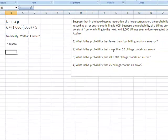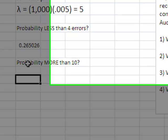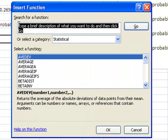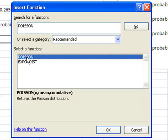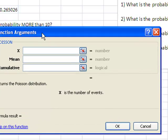The next one says, what is the probability that more than 10 billings contain an error? So, I'm looking for probability more than 10. Come back down here. Go back up to my function box. Now, remember the other way that I can do this is I can search for a function. Just back over that and start typing in P-O-I-S-S-O-N. Then, hit go, and there it is. It says for the Poisson, so I'm going to say OK. Now, it's going to ask me the same thing. I have to think for a minute about what am I looking for.